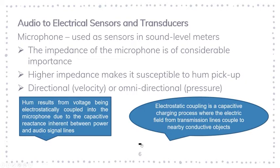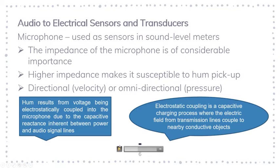The voltage source is electrostatically coupled to the transmission line and the microphone itself — this is the sound of hum that you may have already heard in microphones. To minimize hum, we use a much smaller impedance, or the transmission line or cable of the microphone is braided with coax cable. Those measures will minimize the noise when using a microphone.